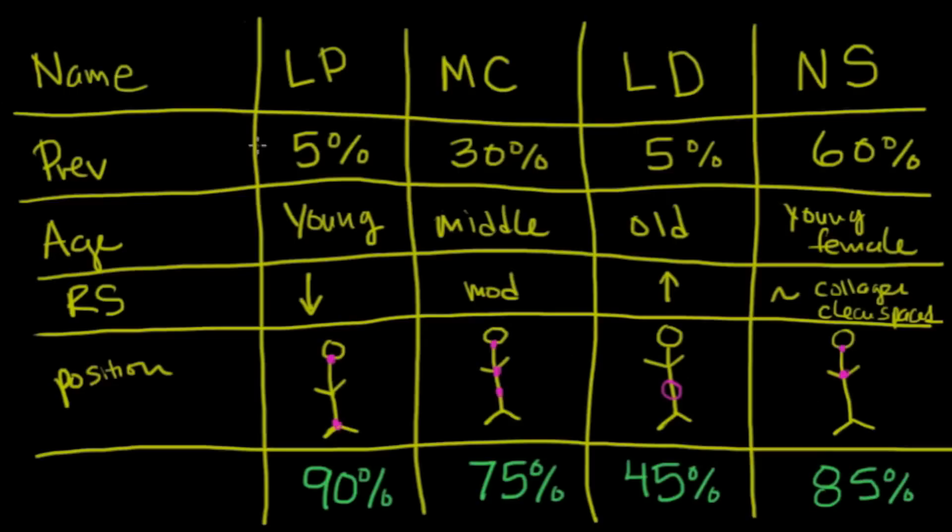Now, a couple things I want you to note here, and that is as the age gets older, so does basically the cure rate goes down. And as the amount of Reed-Sternberg cells goes up, the cure rate also goes down. So the less Reed-Sternbergs you have, the better the prognosis. The older you are, the worse the prognosis.